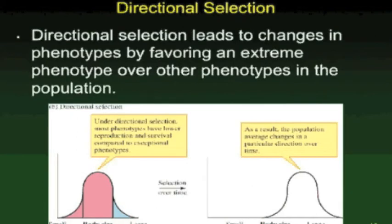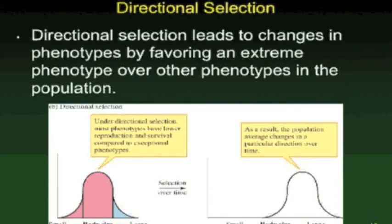Our next example is called directional selection because the majority of individuals in the population are pushed in a particular direction. In this case, there's a benefit for organisms to have a larger body size. The small segment of the population shown in the left graph becomes the group selected for. Over time, this becomes the most common group in the population. More individuals develop a large body size because it allows them to survive more effectively in the changed environment, and you see the graph's curve shifting to the right.